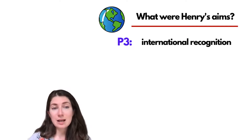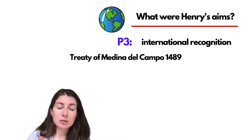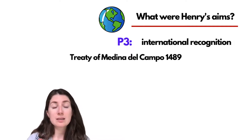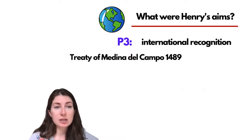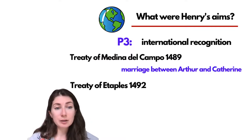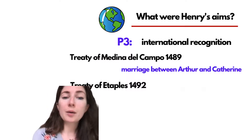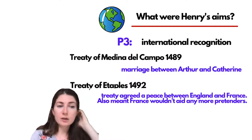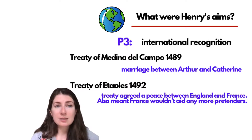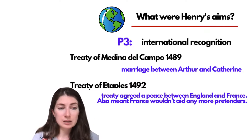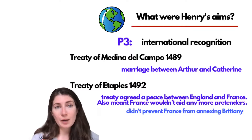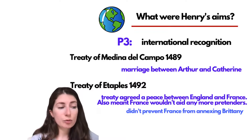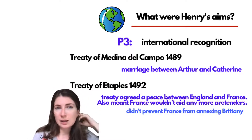Paragraph three — international recognition — has so many pieces of evidence to use. The Treaty of Medina del Campo in 1489 most notably arranged the marriage between Arthur and Catherine. The Treaty of Étaples in 1492 agreed peace between England and France and meant France would no longer aid any pretenders — linking international and domestic threats. Henry wasn't able to prevent France from annexing Brittany, which is a criticism and a failure on Henry's part, but the positives of his foreign policy do outweigh the negatives.